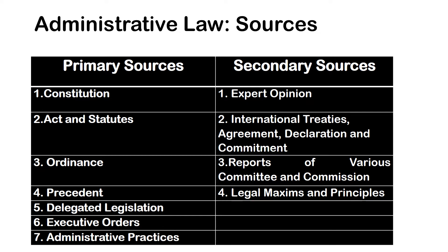Similarly, we have secondary sources of law, which consist of sources that explain, criticize, discuss, or help locate primary law. Unlike primary sources of law, it is not a compulsion to be followed by administrative officials. These sources of administrative law become law only after getting approval from legislative power. Some of the secondary sources are expert opinion, international treaties, agreement, declaration and commitment, reports of various committees and commissions, and legal maxims and principles.